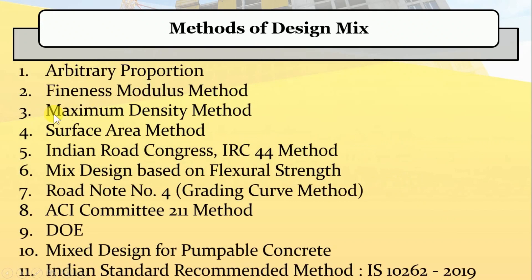There are various methods of proportioning: arbitrary proportion, fineness modulus method, maximum density method, surface area method, Indian Road Congress IRC 44 method, high strength concrete mix design, mix design based on flexural strength, road note no. 4 grading curve method, ACI committee 211 method, DOE method, mix design for pumpable concrete, and the Indian Standard recommended method as per IS 10262-2019. Out of these methods, some are not widely used because of drawbacks and difficulties in their procedures.